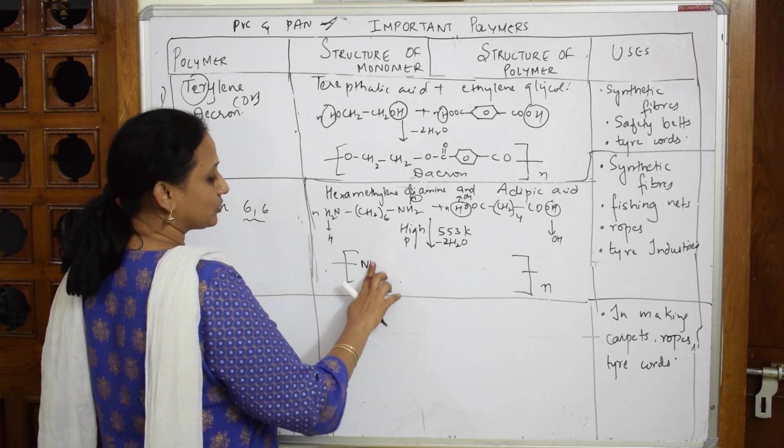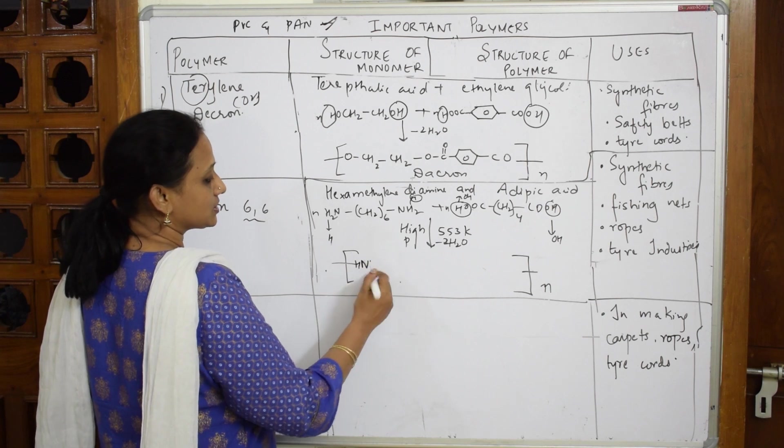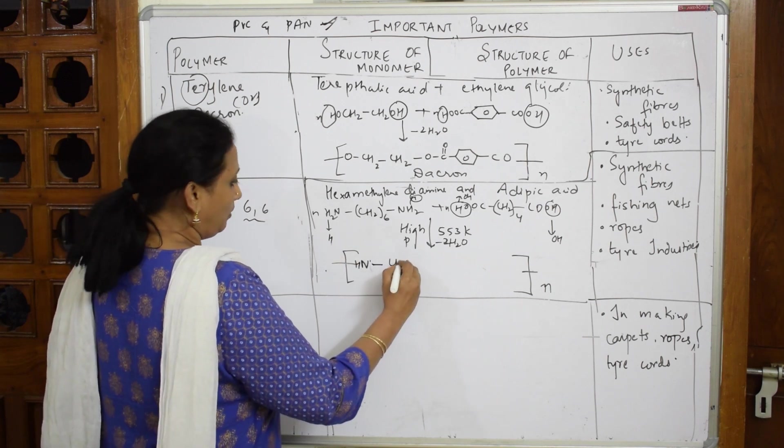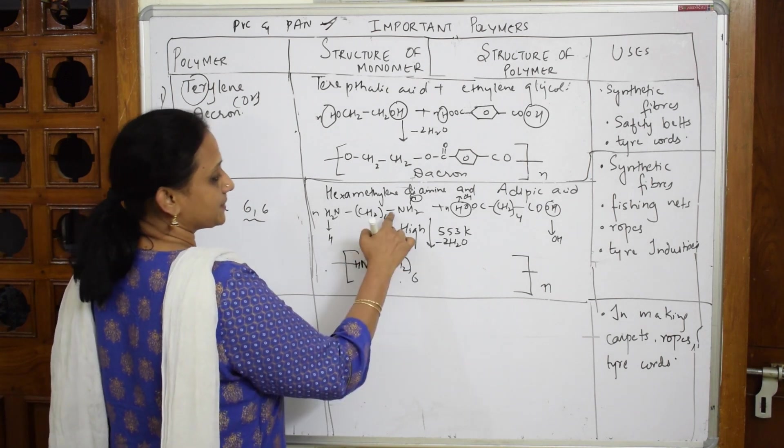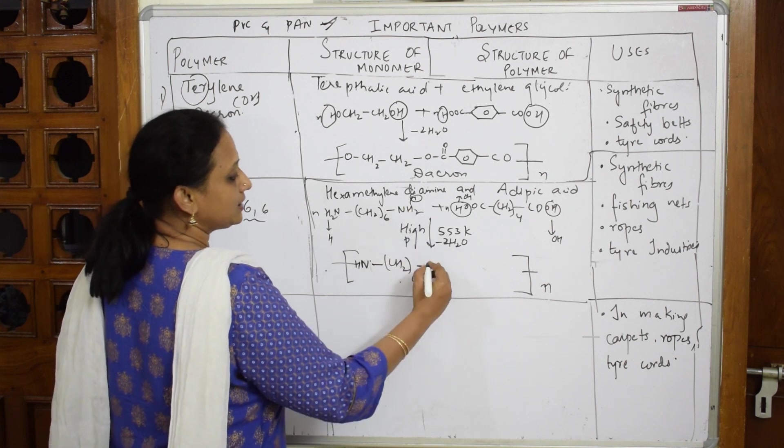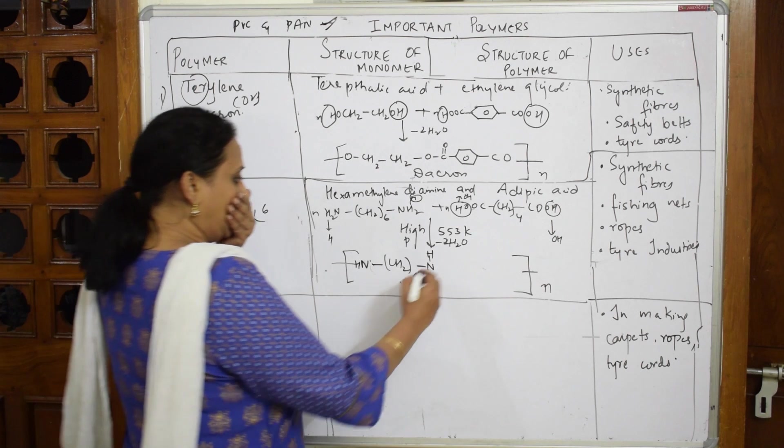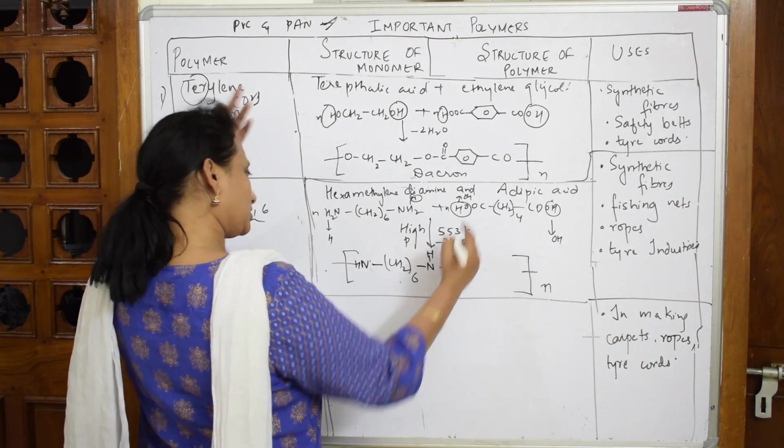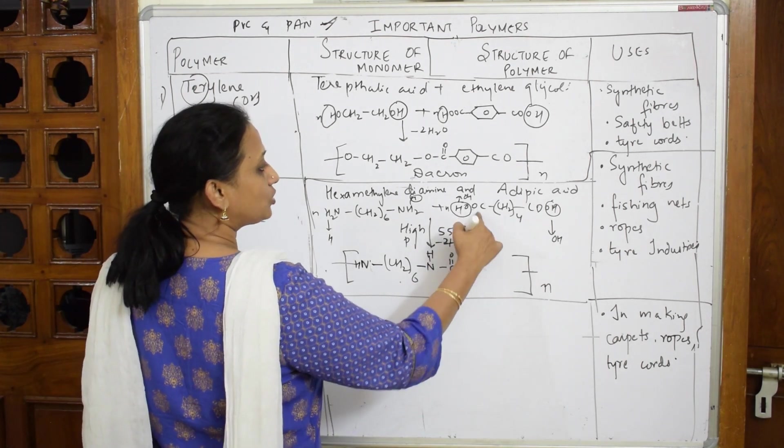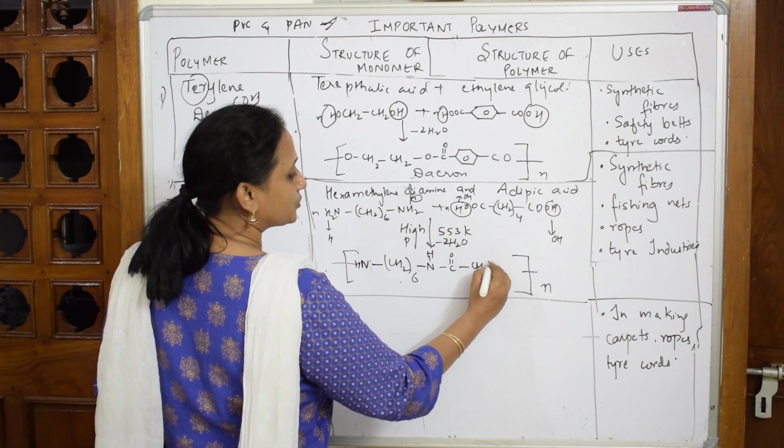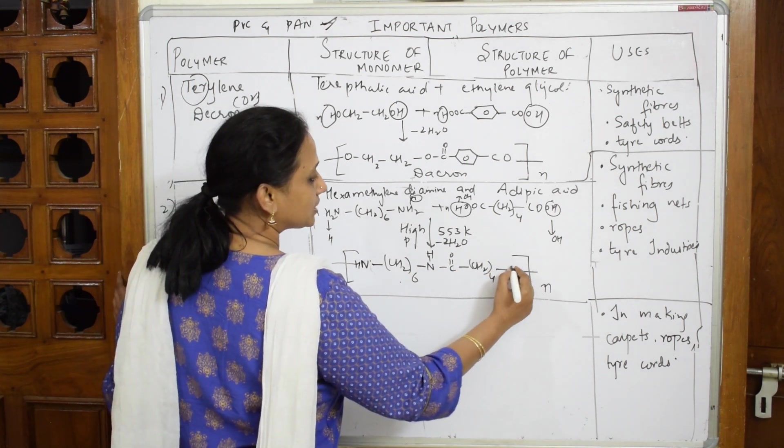When you connect, there are CH2 taken six times. Now this N has become NH. Next, the OH is lost. You have C double bond O, then CH2 taken four times.